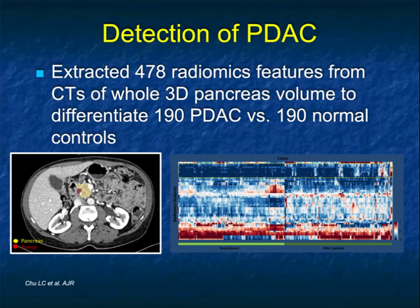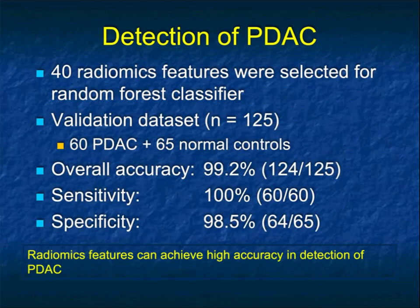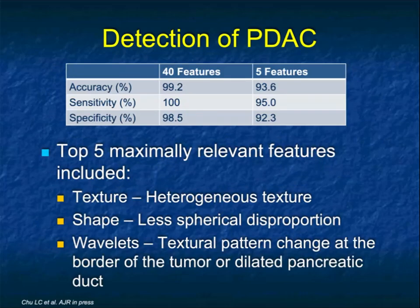When we did our initial work — this is by Linda Chu — we looked at 478 radiomics features from CT scans of both normal patients and patients with pancreatic cancer. You can see that looking at a slice with cancer, there are two different patterns with radiomics: the image on the left is a normal renal donor, on the right is a patient with pancreatic cancer, and there's some similarity but substantial difference. When we looked at 40 radiomics features out of nearly 500 for our random forest classifier, the accuracy for detecting tumor was 99.2%, sensitivity 100%, and specificity 98.5% — indeed impressive numbers.